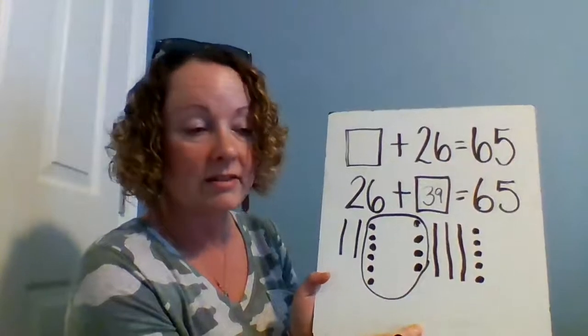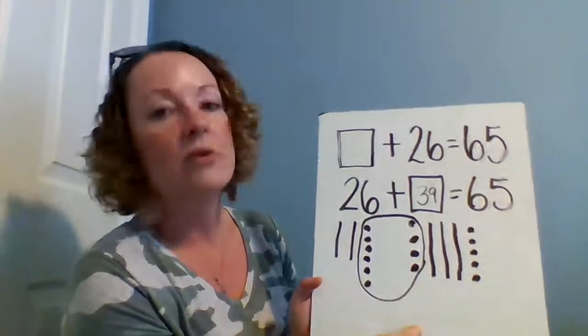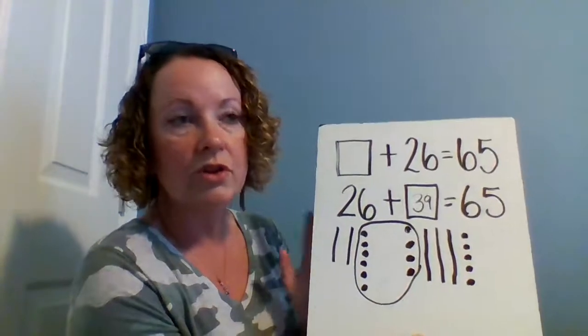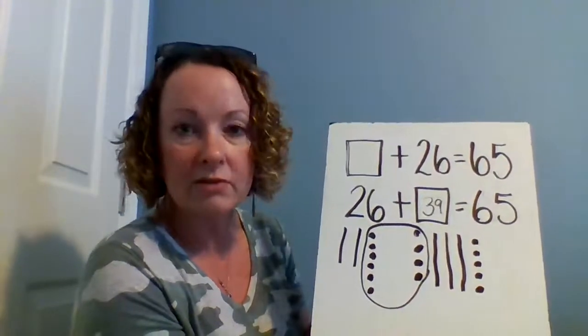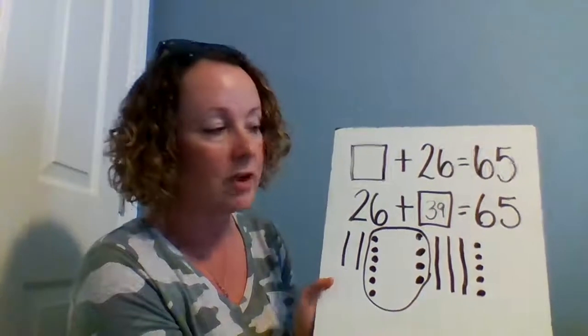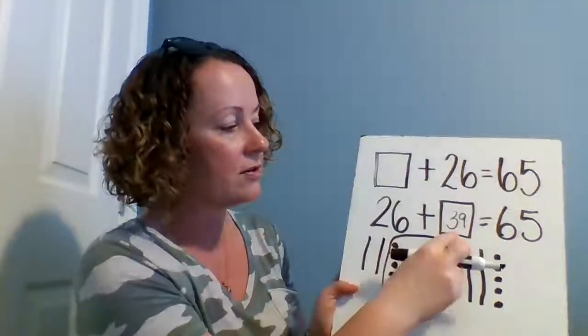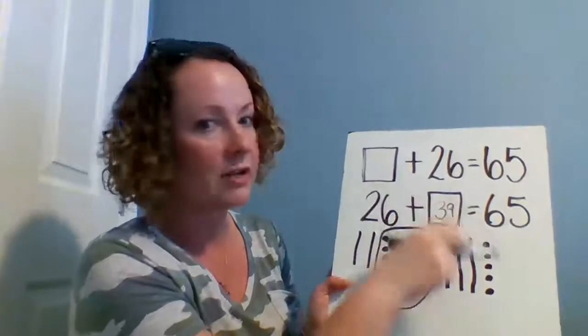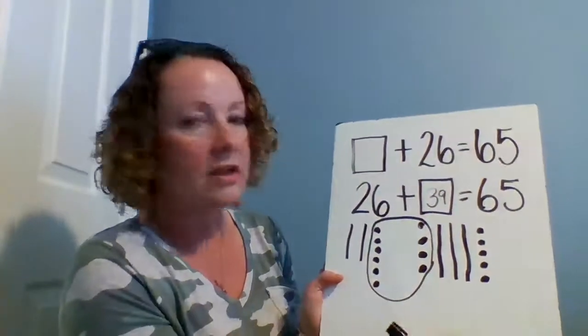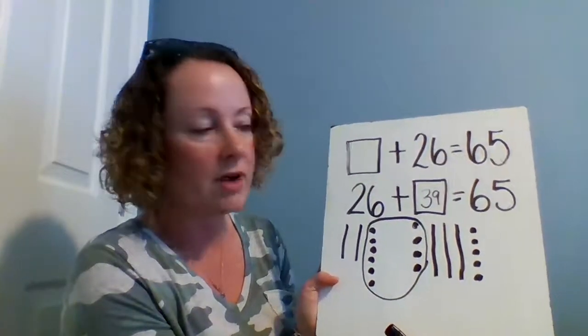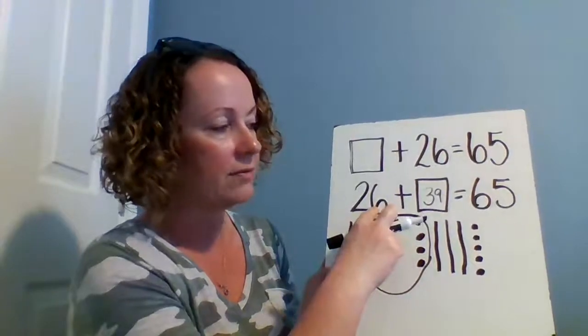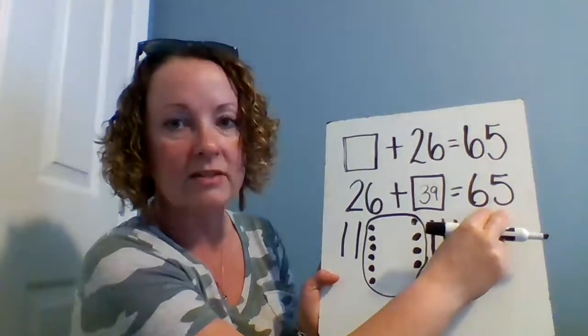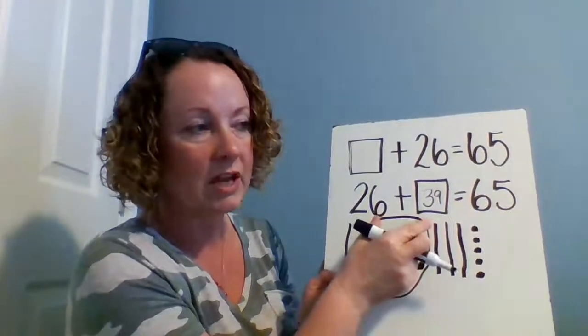Now the cool thing about practicing this concept is you can choose to do this at home and you can practice with your own numbers. You can make these up as you go. Put the box here or put the box here, the unknown number doesn't matter because order doesn't matter when you're adding. The only thing you have to make sure of is this number is smaller than your sum. The sum has to be big enough so that when you add these two numbers together you can get this bigger number.